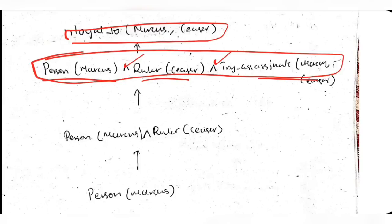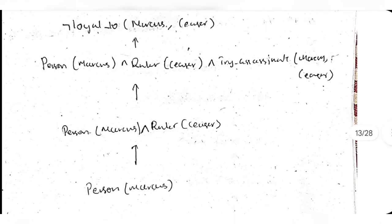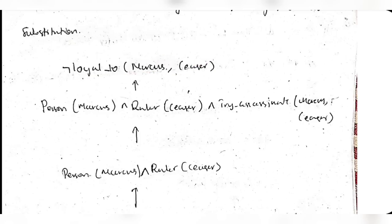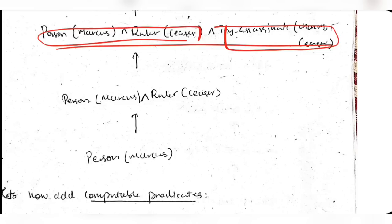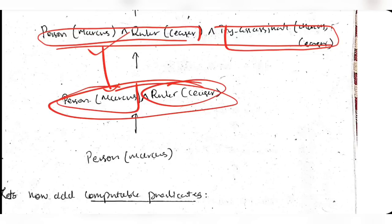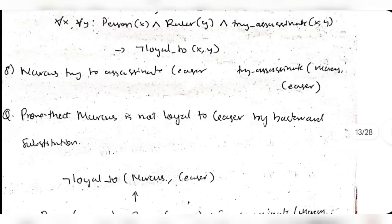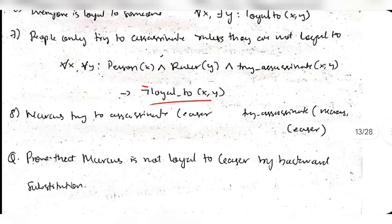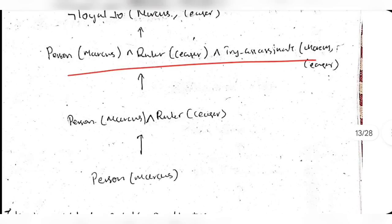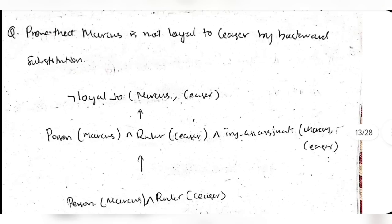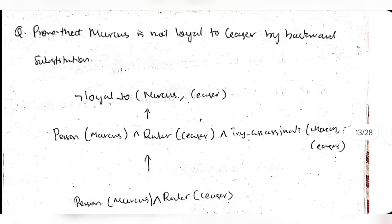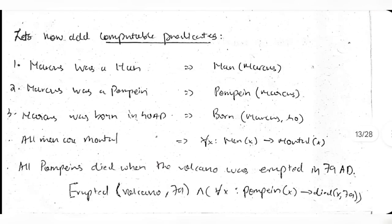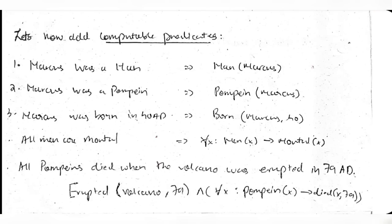Since person(marcus), ruler(caesar), and try_assassinate(marcus, caesar) are all given facts, and their conjunction is true, we can conclude ¬loyal(marcus, caesar) is true. In backward substitution, you start from the back (what you want to prove) and move to the front (the given facts). Keep substituting and eliminating until the remaining statements are known true facts.